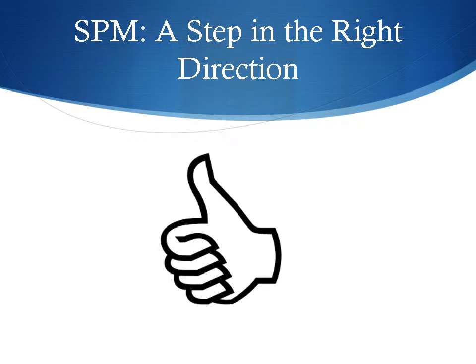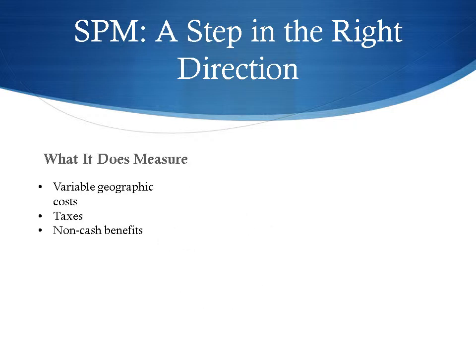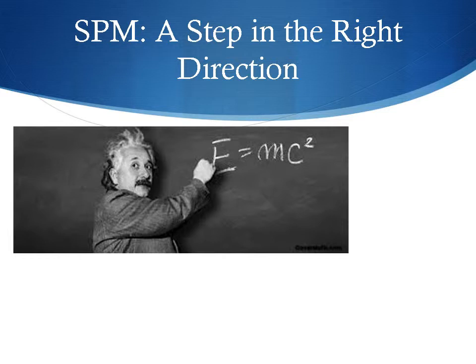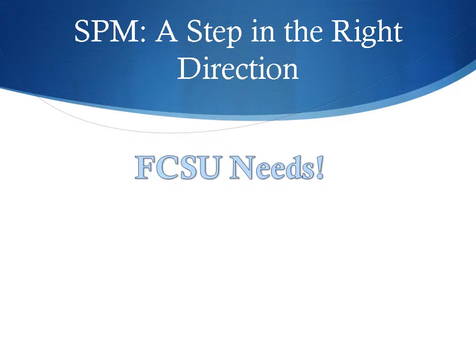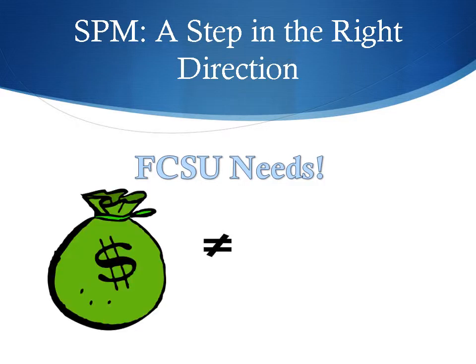The Supplemental Poverty Measure, a proposed alternative to the official poverty measure, does deal with many of the problems inherent in the OPM. It takes into account variable geographic costs, taxes, and benefits that can be used to purchase FCSU needs. The SPM is a relative measure, meaning the poverty line is set relative to the wealth of society. It is based on a person or family's food, clothing, shelter, and utilities — FCSU needs — rather than food times three. It also accounts for varying housing costs, tax credits or expenses, out-of-pocket medical expenses, and in-kind benefits. While this is a step in the right direction, the SPM still falls short of taking into account all relevant factors covered by a capabilities-based approach.